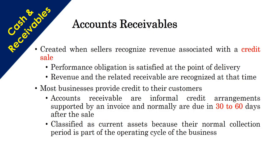Accounts receivable is created when sellers recognize revenue associated with their credit sale. Most businesses provide credit to their business customers. Accounts receivable are informal credit arrangements supported by an invoice and normally are due in 30 to 60 days after the sale. They are classified as current assets because their normal collection period is part of the operating cycle of the business.